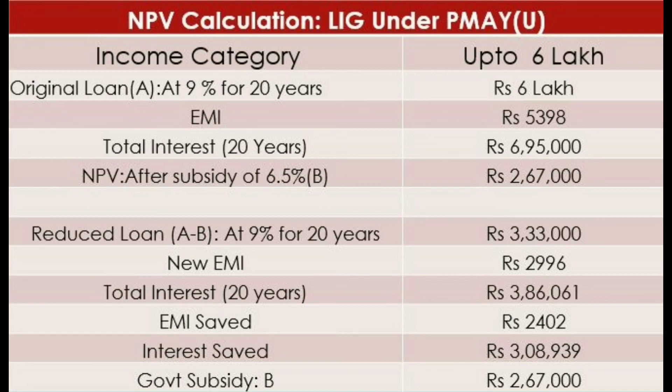If you utilize the interest saving under the EWS category, you can save approximately 5,99,000. This is the M.I.G.2 category information as of March 2021. If you enjoyed this video, please like, comment, subscribe, and click the bell button.